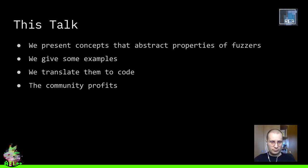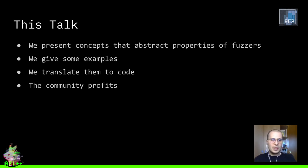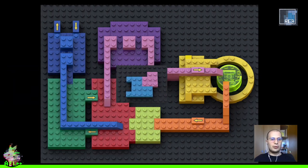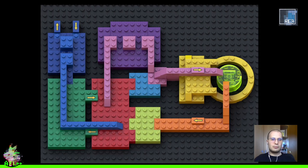In the following part of this talk, we'll present the concepts we define to abstract the properties of fuzzers. We will give very simple examples related to fuzzers you should already know — like AFL, libFuzzer, and so on. We will show some bits of these entities translated to code — in our case, Rust — and we hope the community will profit and learn about this new vision of fuzzing as building blocks. All these parts should be swappable and can be replaced without any problems with the other parts. So if you define a new type of mutator, swap it with the pre-existing mutator, and all the other stuff works without problems.